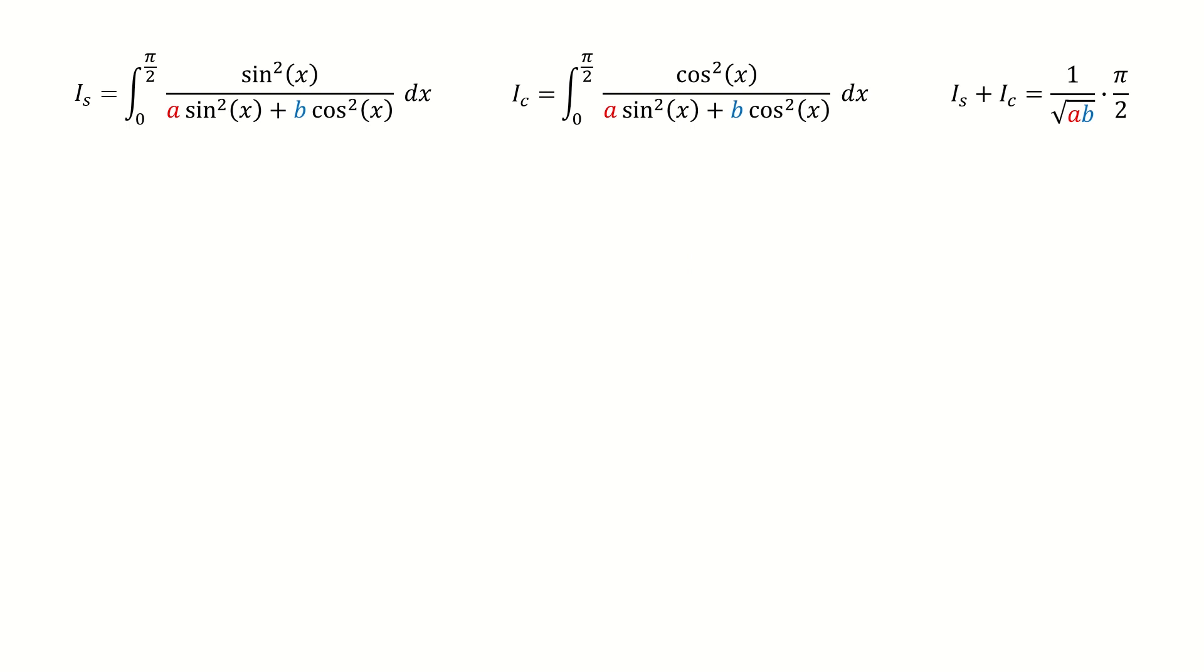Next, we need to find another linearly independent equation, then we are done. So we multiply the factor a on both sides of the first integral. Similarly, we multiply the factor b on both sides of the second integral.